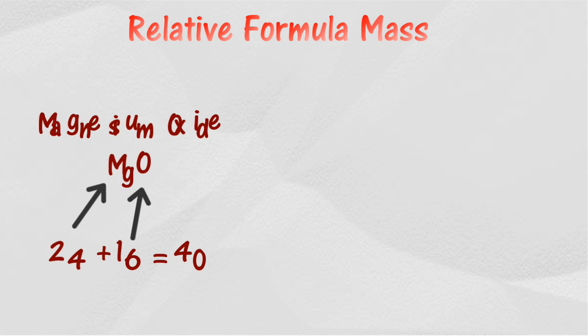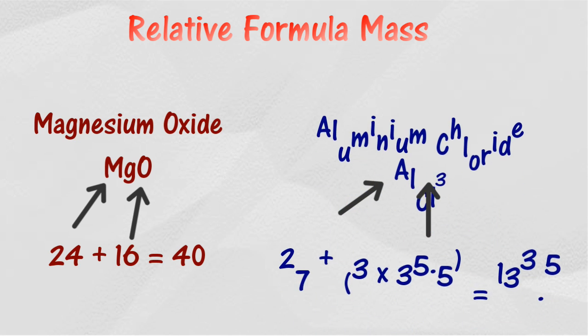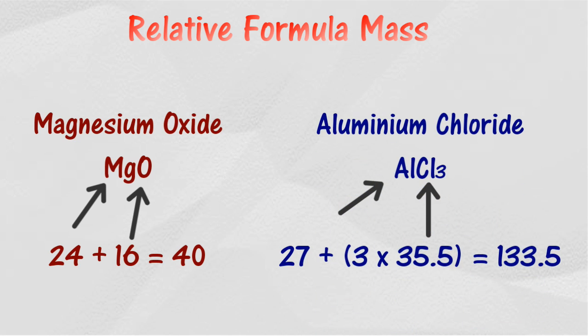For example, the relative formula mass of magnesium oxide is 40. The relative formula mass of aluminum chloride is 133.5.